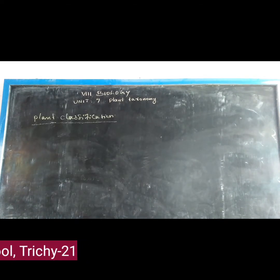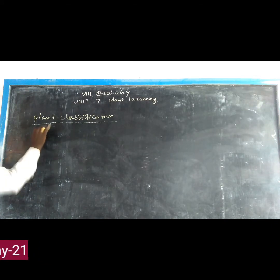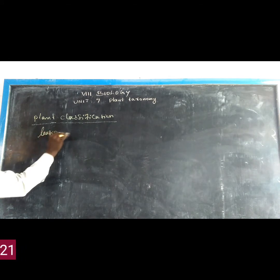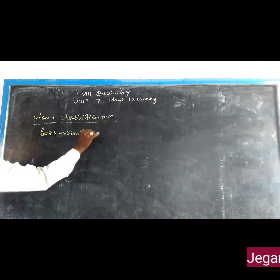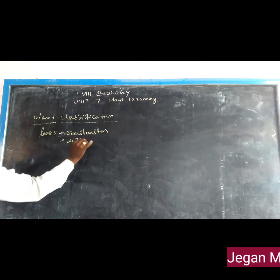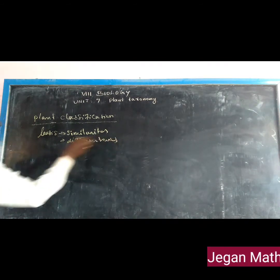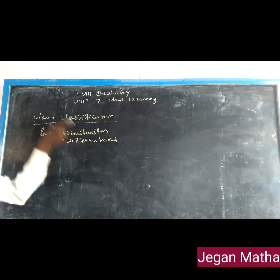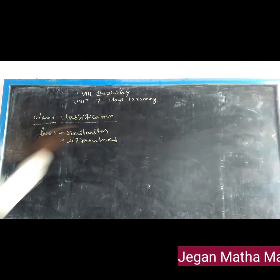Next is classification. Classification means the plants are classified based on their similarities and differences.